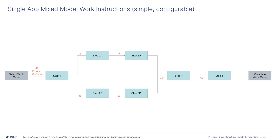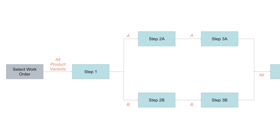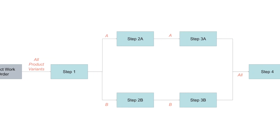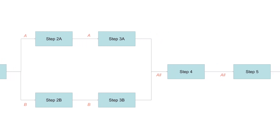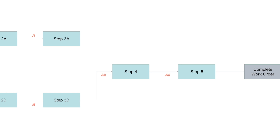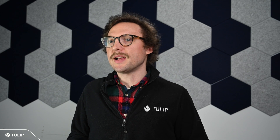Let's take two hypotheticals and look at two processes in a single plant at AcmeCore. First, Acme has an assembly cell where a small number of assemblies and sub-assemblies are completed depending on the orders up that day. There isn't a lot of variation within any of the processes, and operators don't want to scroll endlessly through each step. They know the process and just want to track their work against production targets, log defects, and reference SOPs when necessary. For this use case, Acme decided it made sense to go with a simple app-based work instruction design.